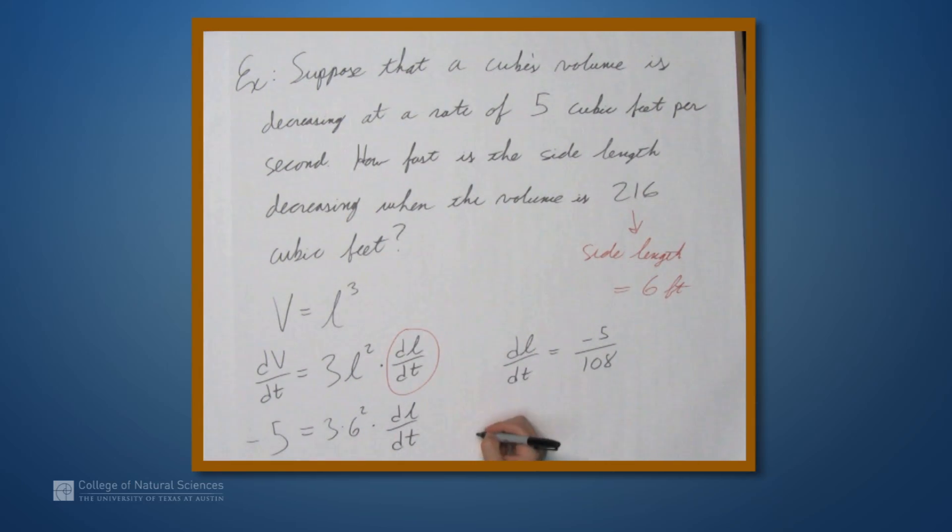So, this means that the side length is negative. So, what does it say about the side length? It's decreasing. So, the side length is decreasing at a rate of 5 over 108 feet per second.